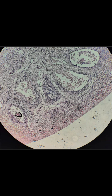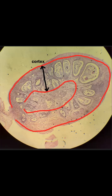Each follicle contains within it an ovum, lined by granulosa cells and surrounded by a layer called the theca. The medulla, on the other hand, contains blood vessels, lymphatics and connective tissue — not follicles.